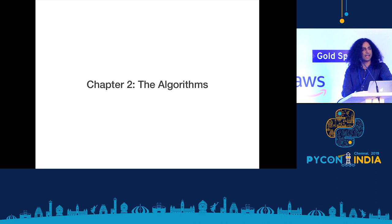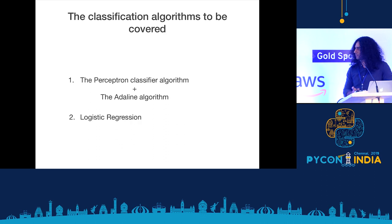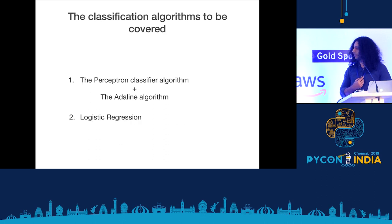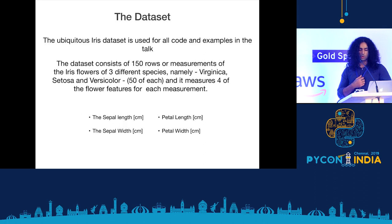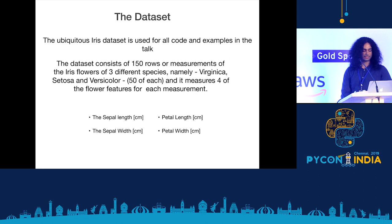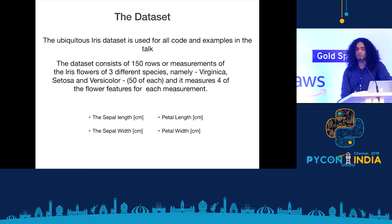Chapter 2: the algorithms. We'll be covering the perceptron classifier, the Adeline or adaptive linear neuron classifier, and the ever so popular logistic regression classifier. We will cover the math behind them, how they work, and how you can write your own classifiers. The dataset we'll be using is the Iris Flower dataset — it's very popular.